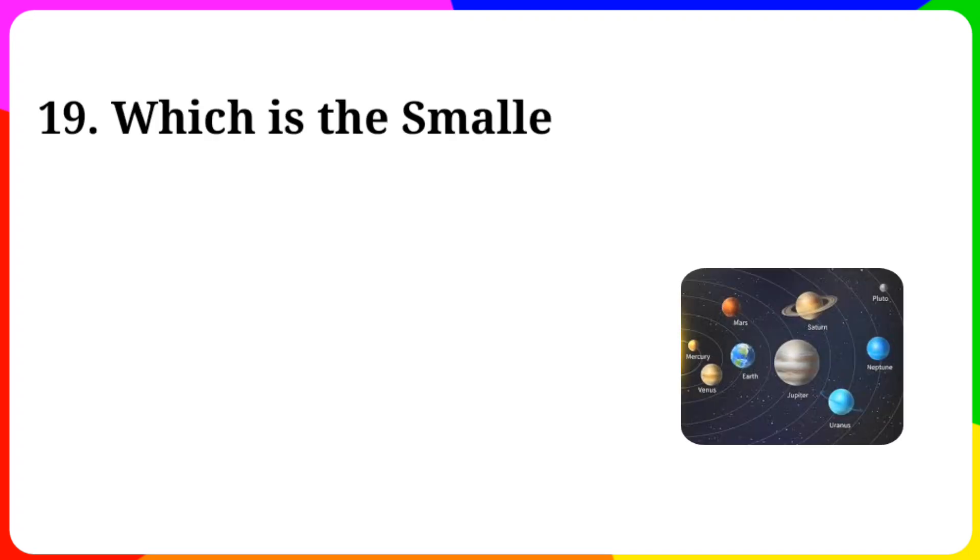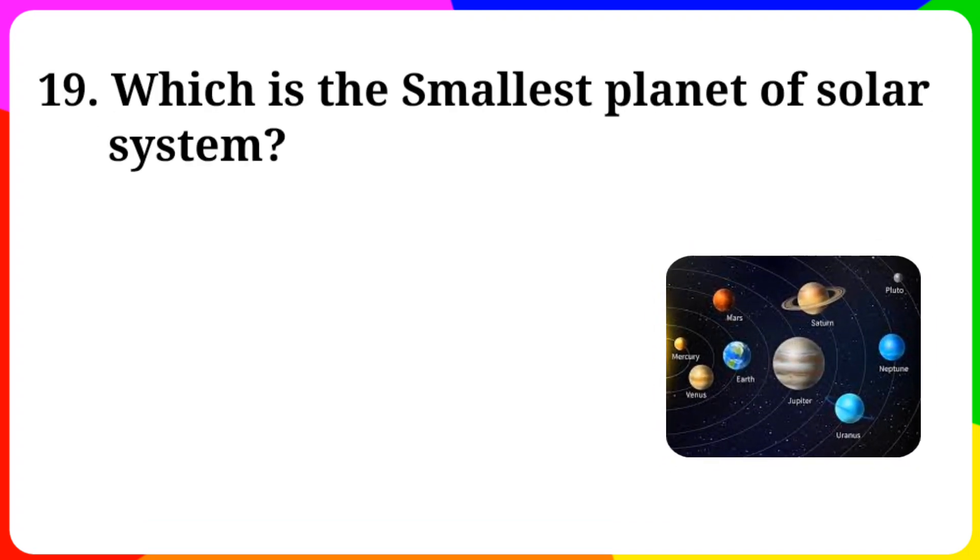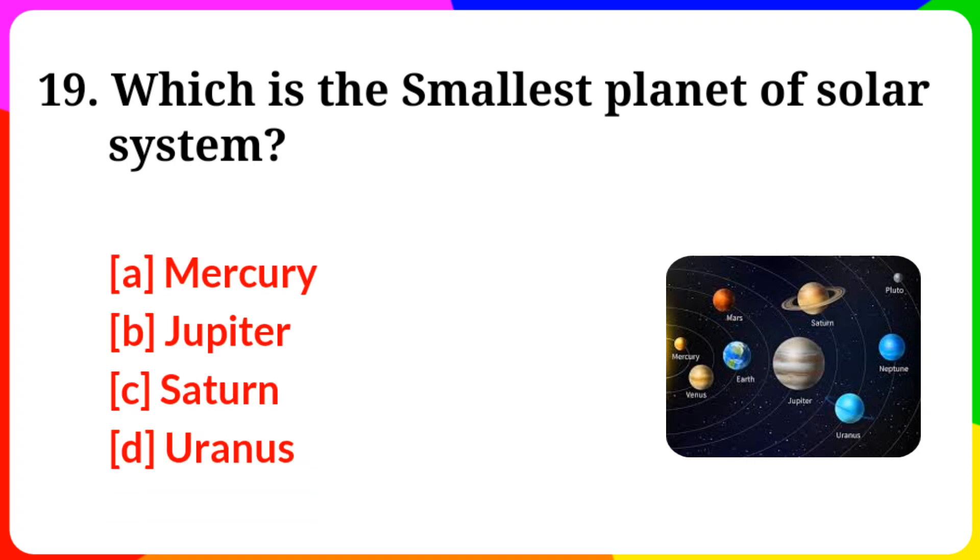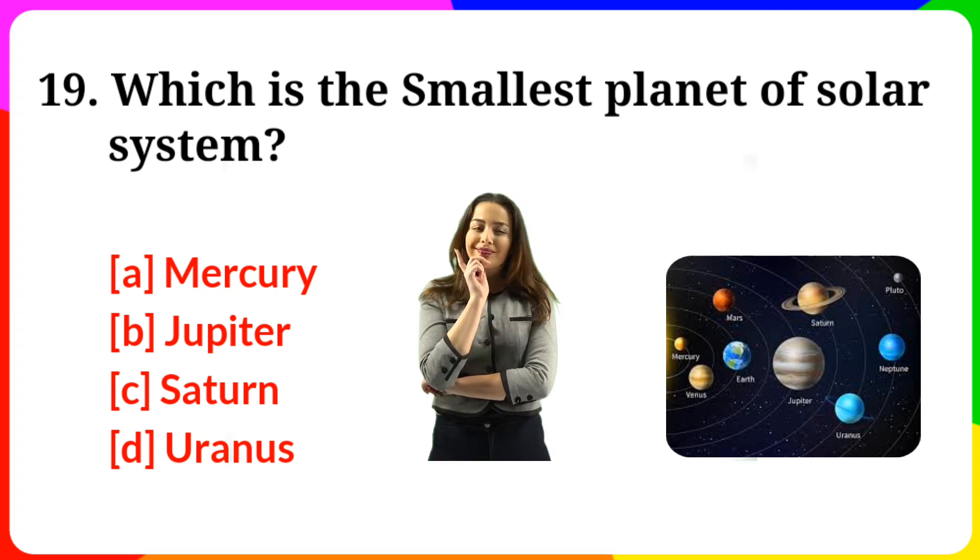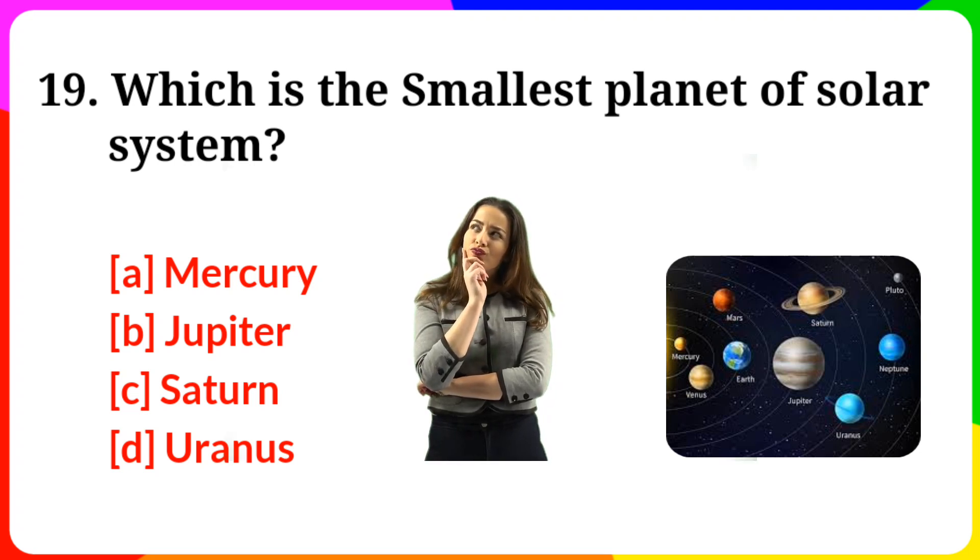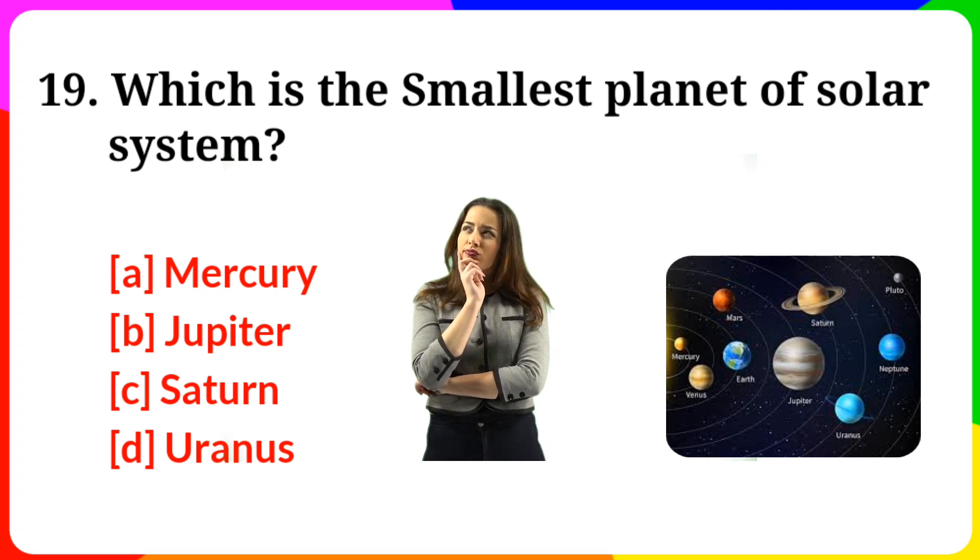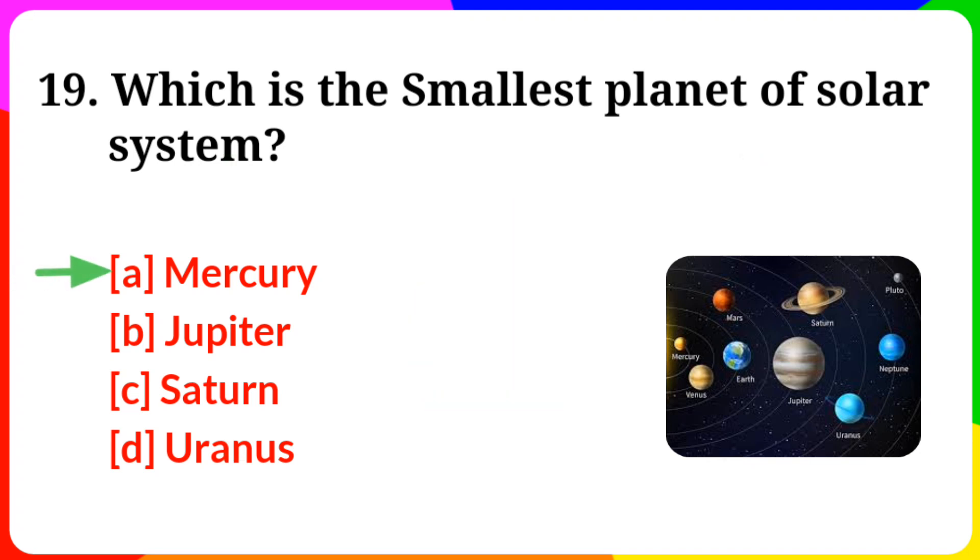Question number 19. Which is the smallest planet of solar system? Option A: Mercury. B: Jupiter. C: Saturn. D: Uranus. Answer is option A, Mercury.